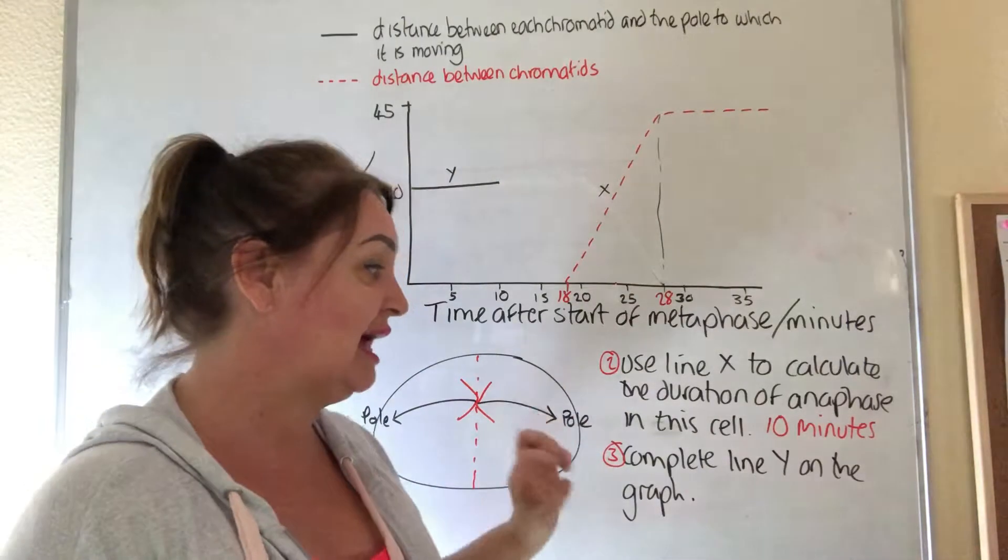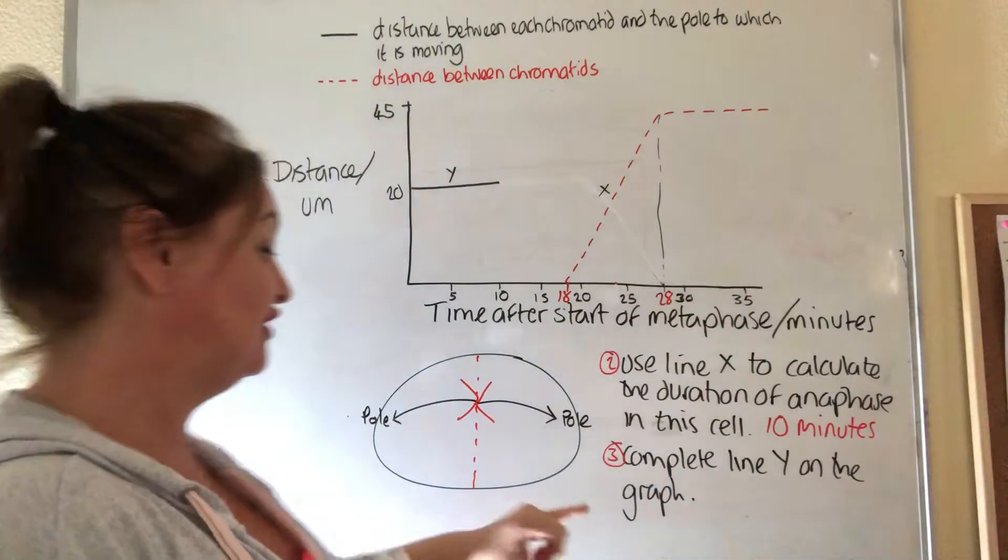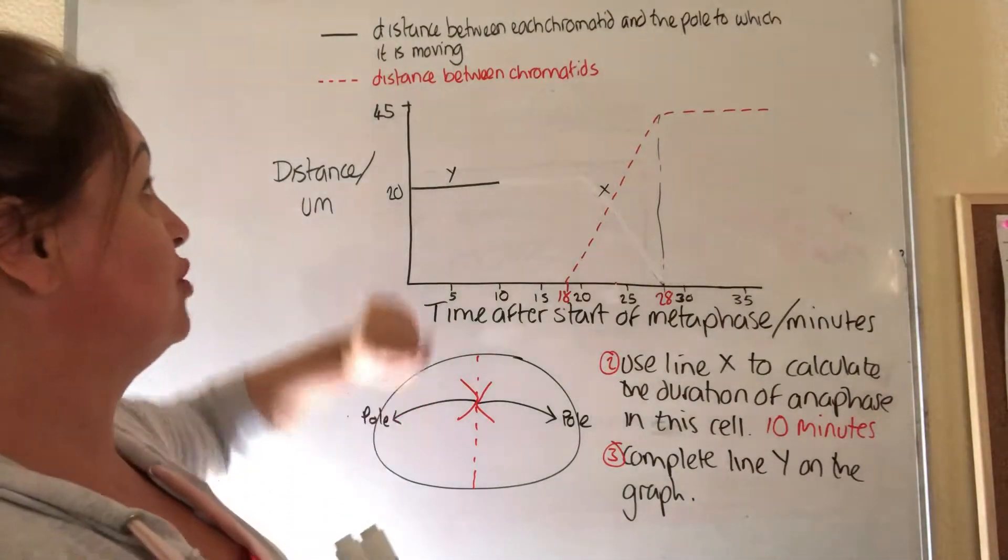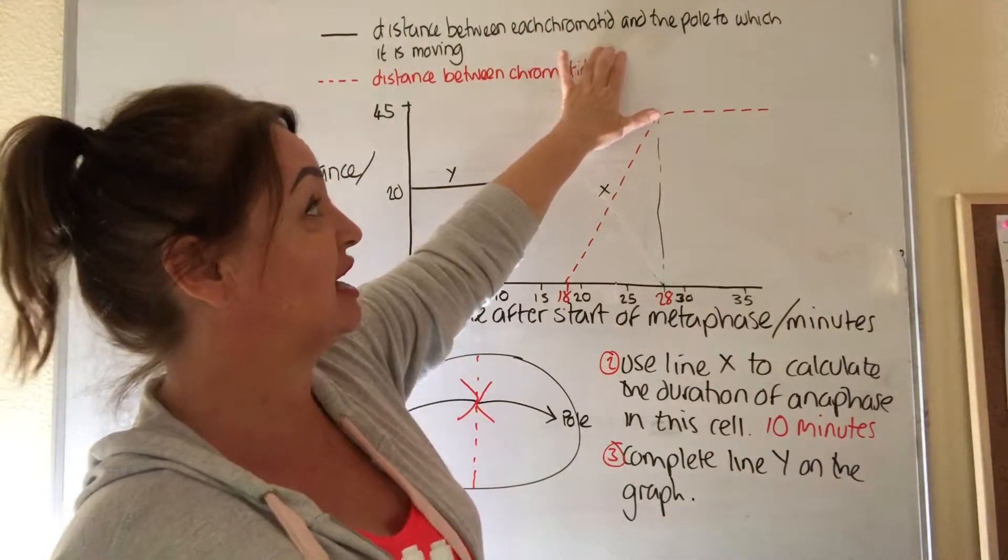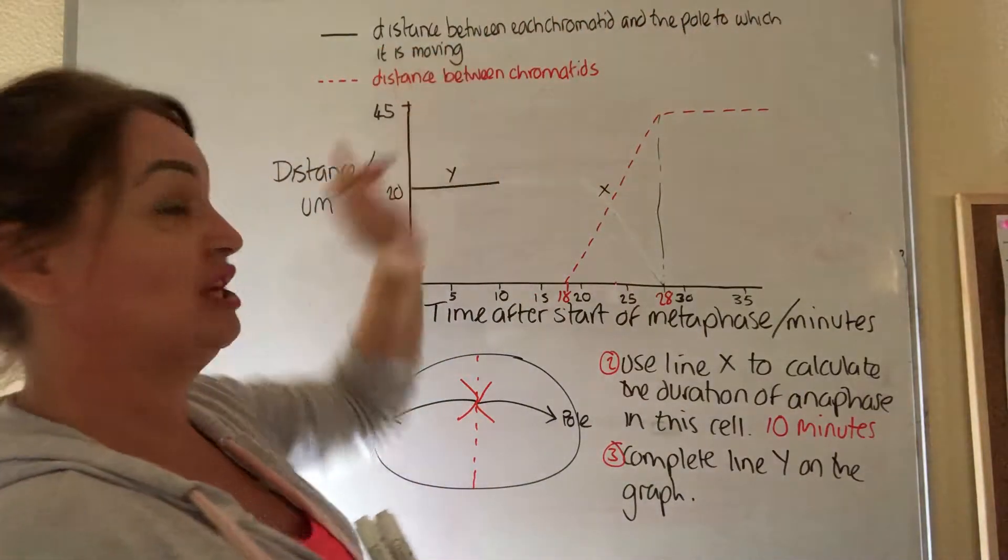Question 3 says, complete line Y on the graph. So let's have a little look what that would be. The distance between each chromatid and the pole to which it's moving.